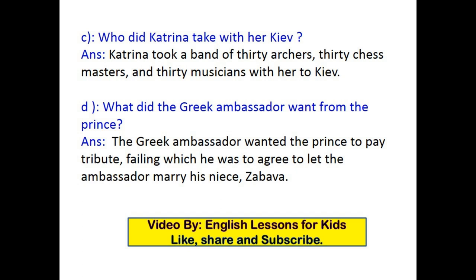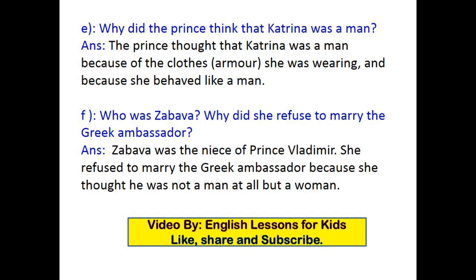E: Why did the prince think that Katrina was a man? The prince thought that Katrina was a man because of the clothes she was wearing and because she behaved like a man. F: Who was Zbawa? Why did she refuse to marry the Greek ambassador? Zbawa was the niece of Prince Vladimir. She refused to marry the Greek ambassador because she thought the ambassador was not a man at all, but a woman.